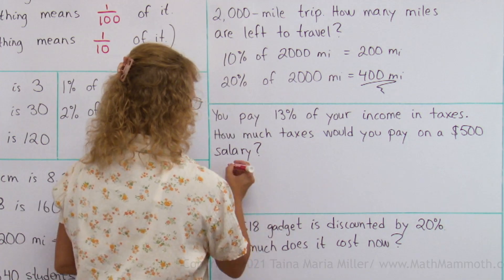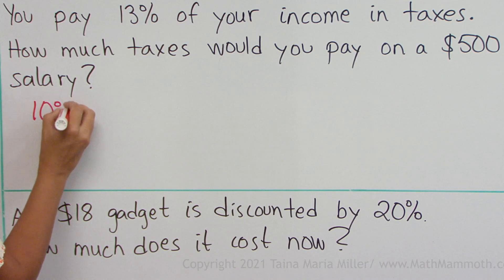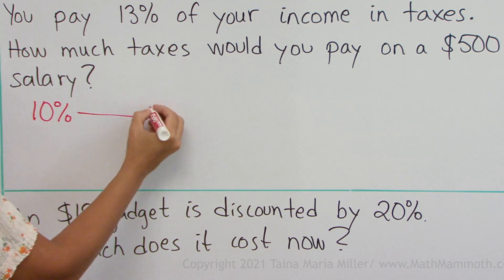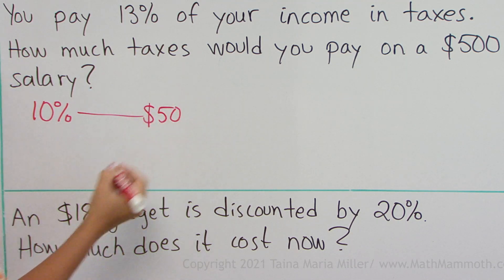So let's start thinking. We can surely find out 10% of that number. 10% of $500 would be $50, right, the 10th part.